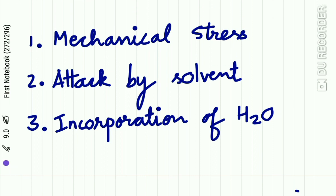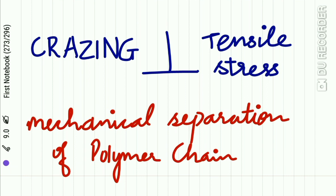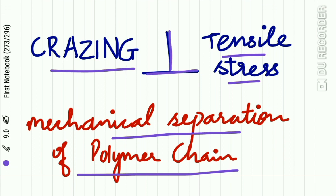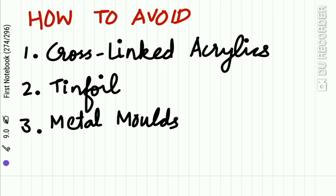The causes of crazing cracks are mechanical stress, attack by any solvent, or incorporation of water, all of which may result in crazing. These cracks occur at right angles to the tensile stresses. Crazing is the mechanical separation of polymer chains, occurring at right angles to the tensile stress. To avoid crazing: using cross-linked acrylics can reduce it, using tin foil separating media can reduce it, and using metal molds can also reduce crazing.